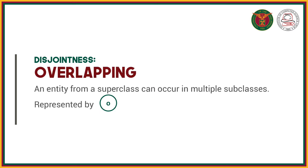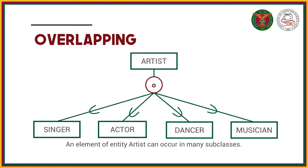Then we have overlapping, which is basically the opposite of disjoint. An entity from a superclass can occur in multiple subclasses, and the notation is the letter O inside the circle. For example, an artist can be a singer, and can also be an actor, a dancer, or a musician at the same time. So overlapping means the superclass entity can take on different subtypes simultaneously.